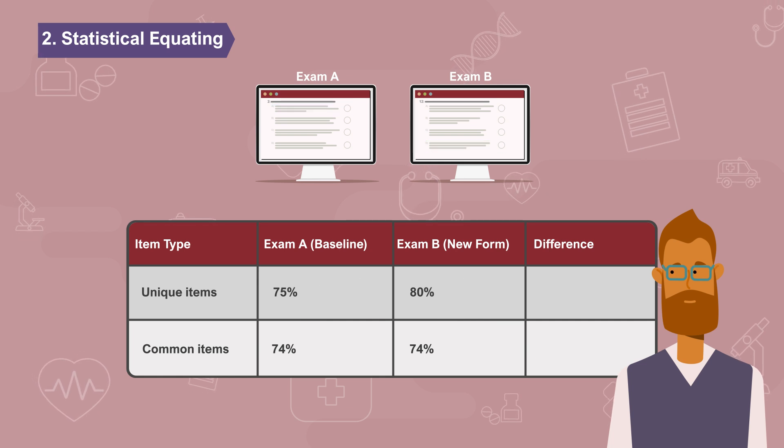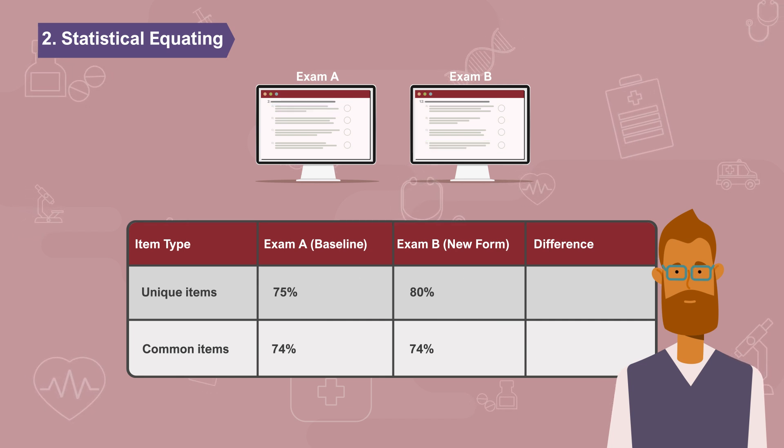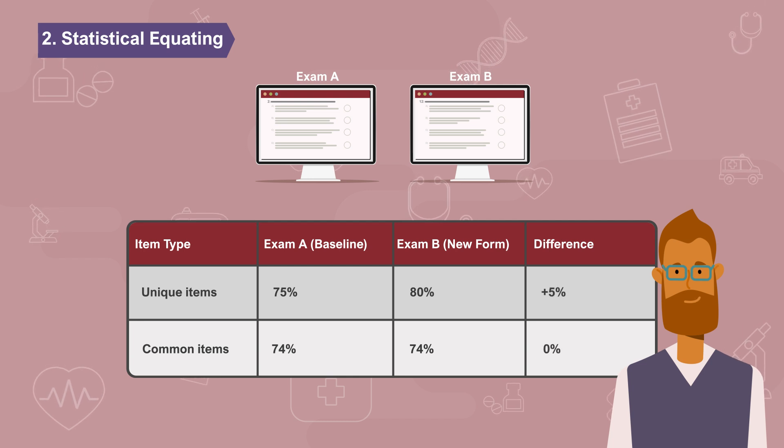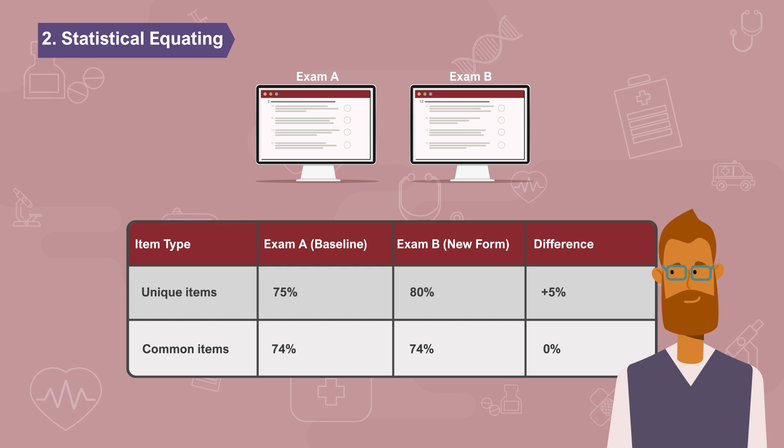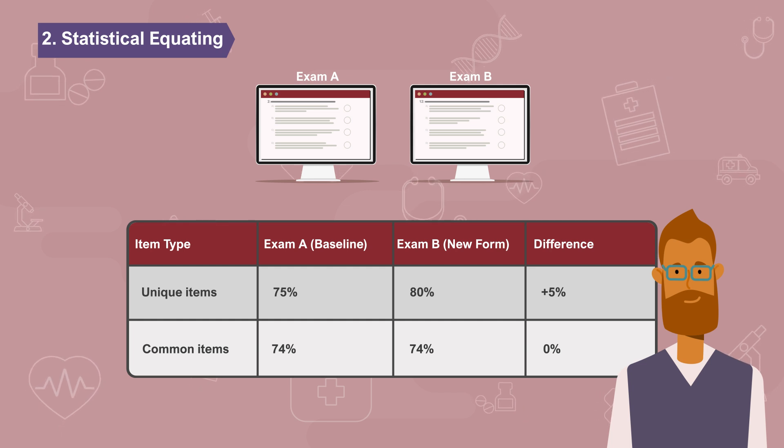It would not be fair for the pass mark to remain the same since exam B is easier than exam A, so psychometricians adjust the pass mark. In this example, they would bump up the pass mark by 5% for exam B so that it is representative of the same competence level.